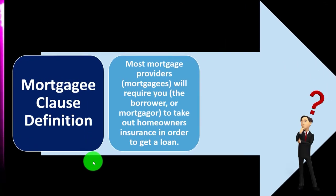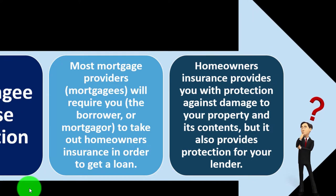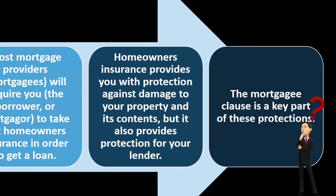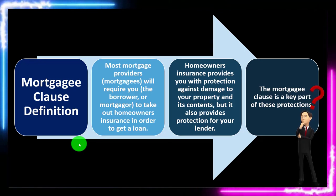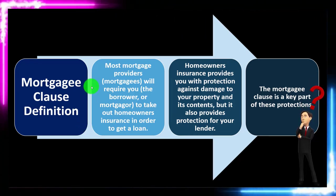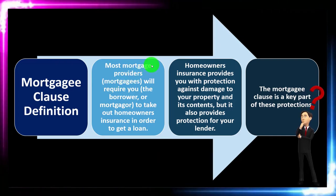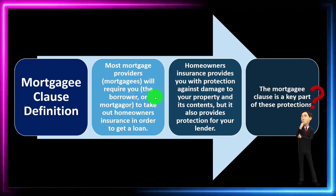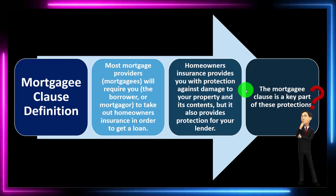Mortgagee clause definition: most mortgage providers — the mortgagees, the lenders — will require you, the borrower or mortgagor, to take out homeowner's insurance in order to get a loan. Homeowner's insurance provides you with protection against damage to your property and its contents, but it also provides protection for your lender, since the home is the collateral on default of the loan. The mortgagee clause is a key part of these protections.